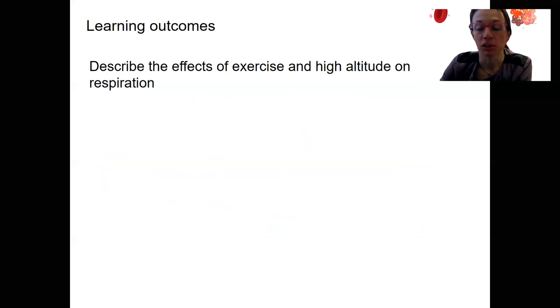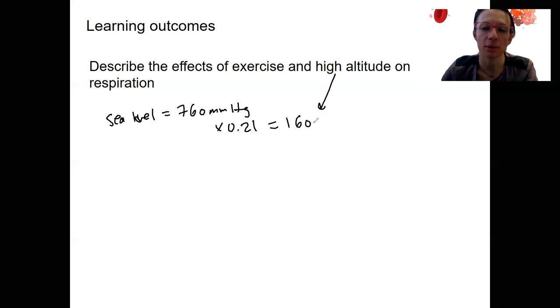Okay, almost forgot. I'm doing high altitude as well here. So high altitude. Remember, at sea level, we've got 760 millimeters of mercury of pressure from the atmosphere. If we do that times the percentage of oxygen, that's 160 millimeters of mercury. I have that memorized. I don't do math that quickly.